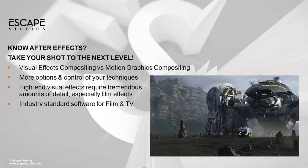High-end visual effects really require tremendous amounts of detail — such as this photograph from Prometheus. The type of elements you'll be getting — CG renders, smoke elements shot over black — all need to be brought up to a very high standard because they're projected very large and the realism is what you're aiming for. After Effects can certainly do that, but it takes a lot longer and you don't have the full control and amount of tools at your fingertips to integrate at that extreme level. That's why a lot of people want to shift and go: now I can take my shot even further and work on some really cool big master shots.